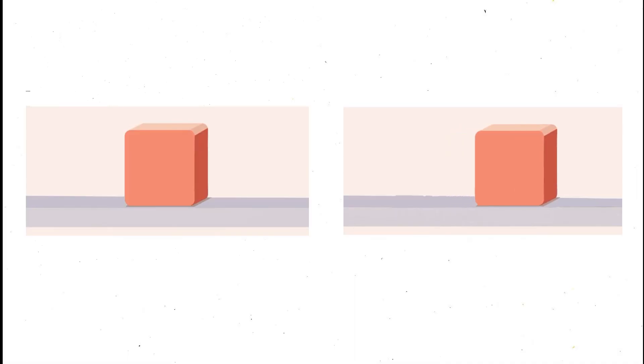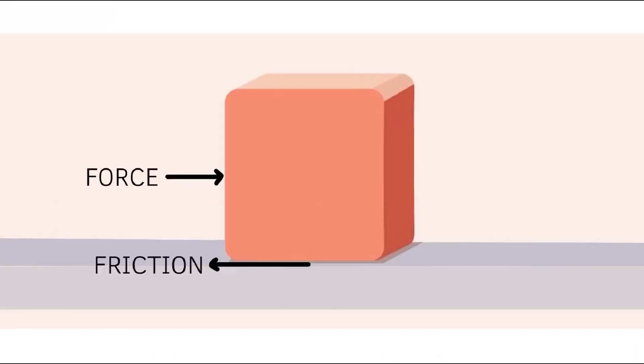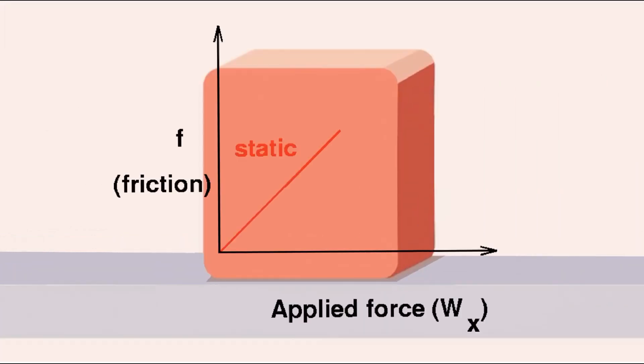There are several types of friction, but let us first talk about dry friction, in which friction acts between solid surfaces. Dry friction can act on both static and dynamic bodies. Static friction is equal to the force that it opposes until the body starts moving. Therefore, static friction is variable and depends on the applied force.